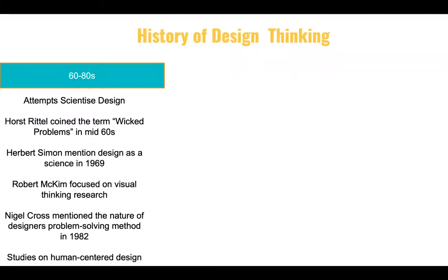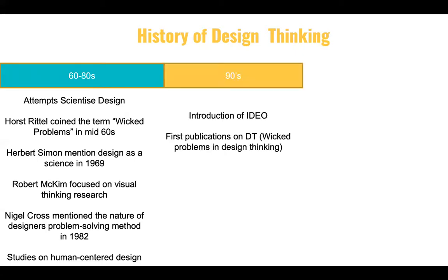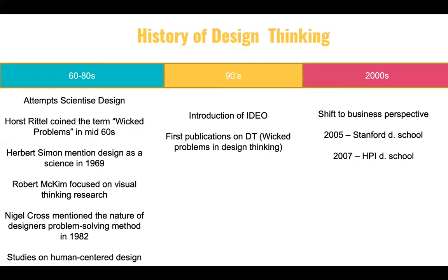Design Thinking started in the 1960s, when people were talking about how to scientifically discuss the design process. The term 'wicked problems' emerged — really difficult problems that Design Thinking can be used for. Robert McKim also focused on visual thinking research — how we can visualize problems. In the 1980s and 90s, IDEO was introduced as one of the leading schools in Design Thinking, along with further studies on wicked problems. Then in the 2000s, the Stanford D School — another pioneer in the area — emerged, with Hassel Platter leading that movement.